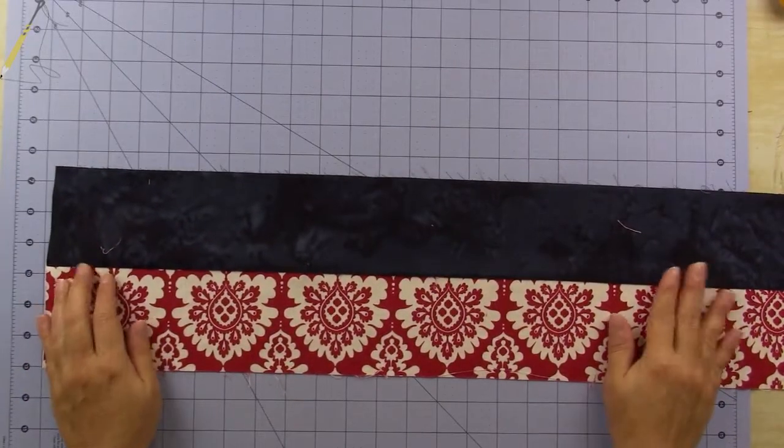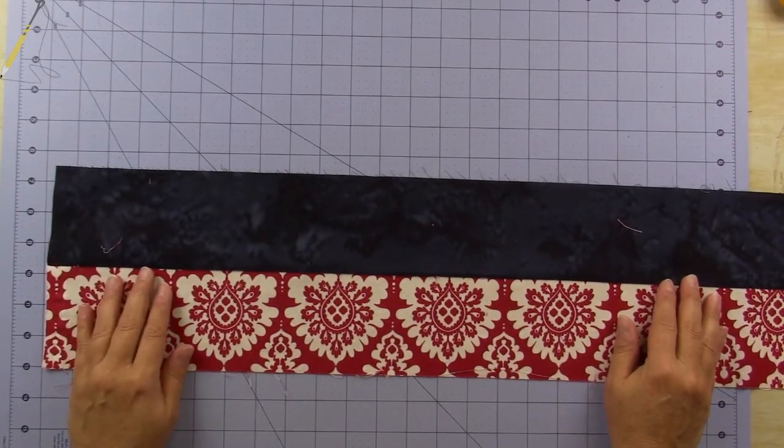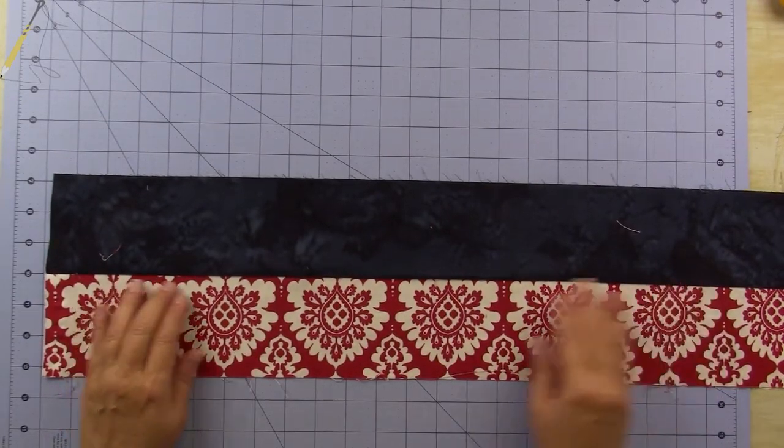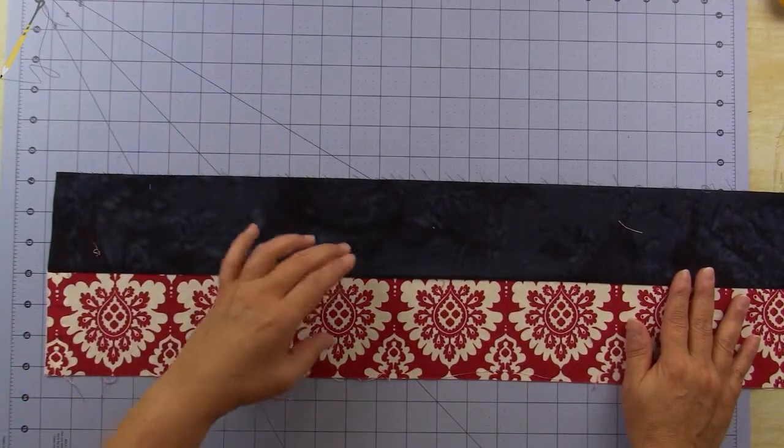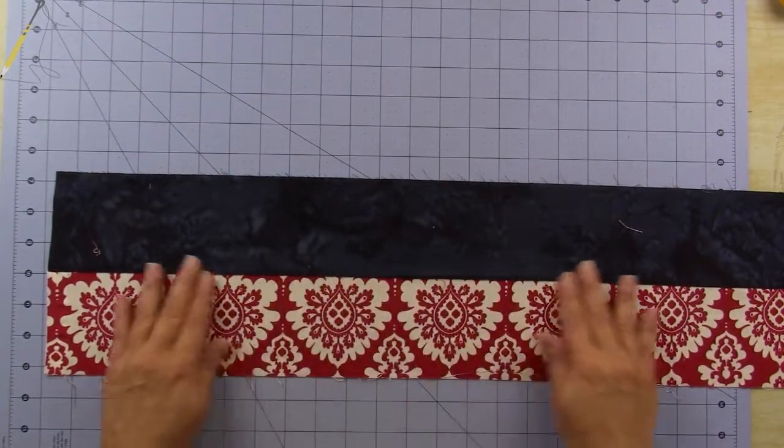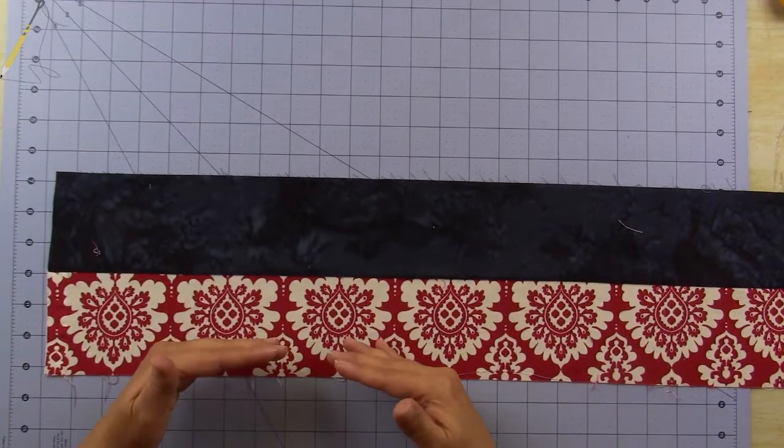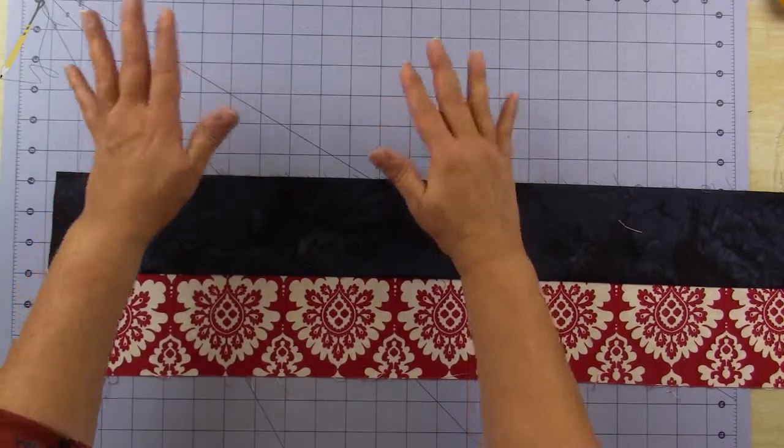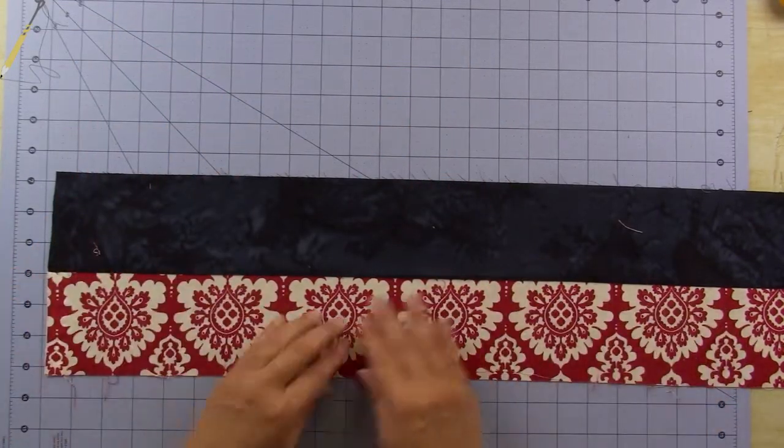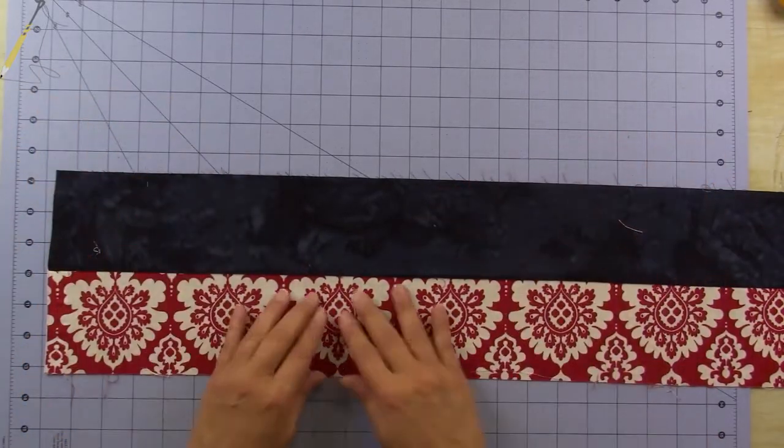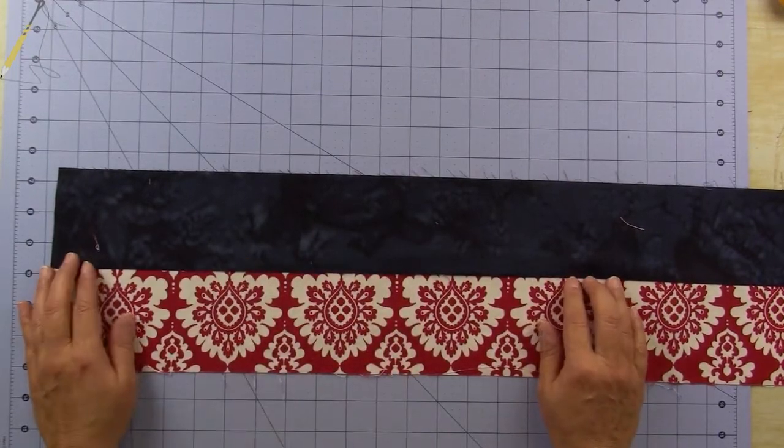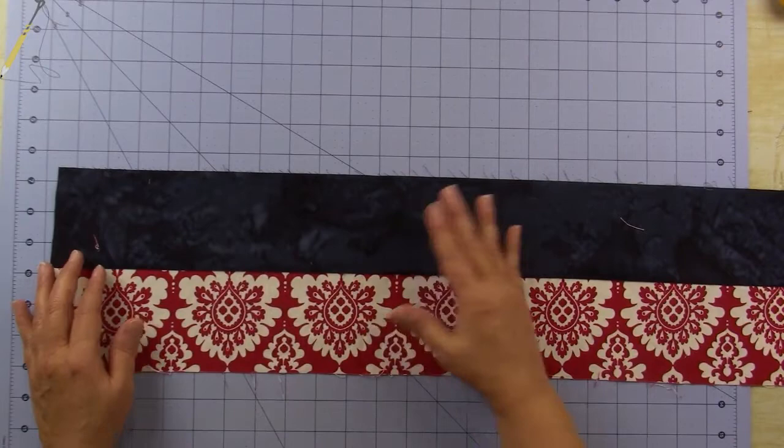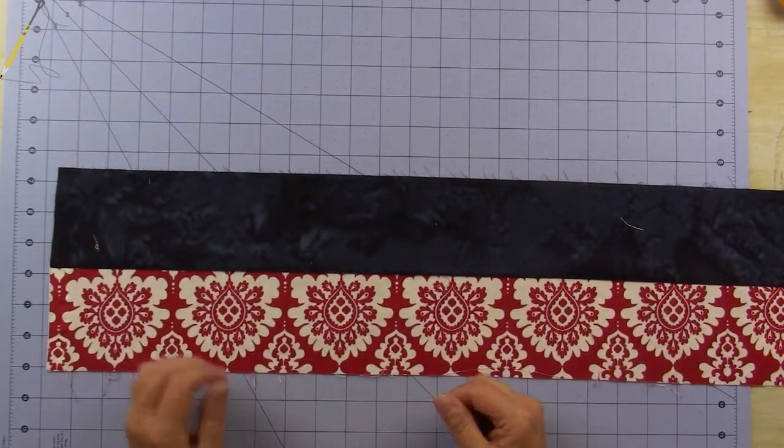Now this is called a strip set because it's two strips—two or more strips pieced together. And if you were making a strip set that had more than two strips, I would suggest after each addition of each strip you press. Sometimes you can add, you know, go ahead and just sew all the strips together and then take it to the ironing board and press each seam basically at the same time. But I suggest that you stitch a seam and press, and then add the next one on here and then press.